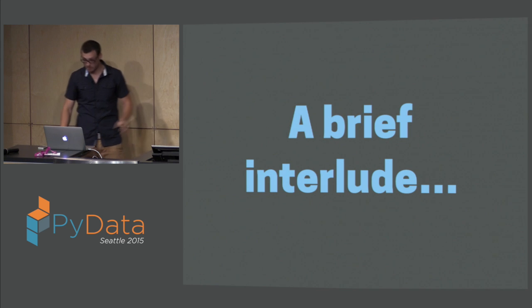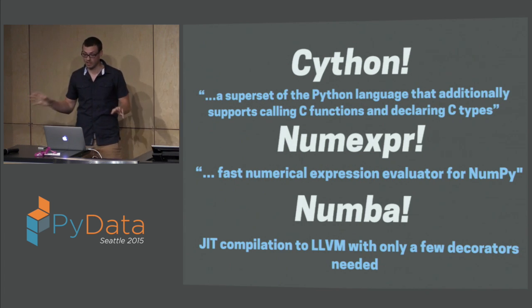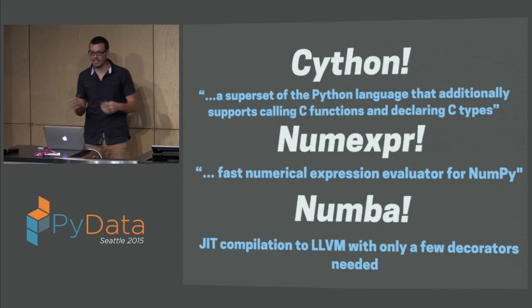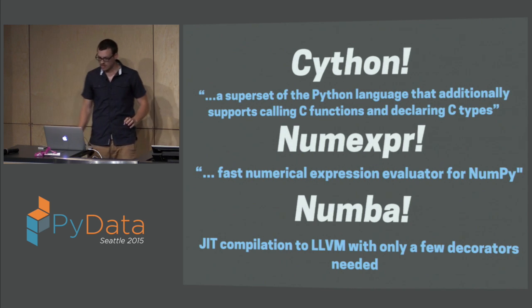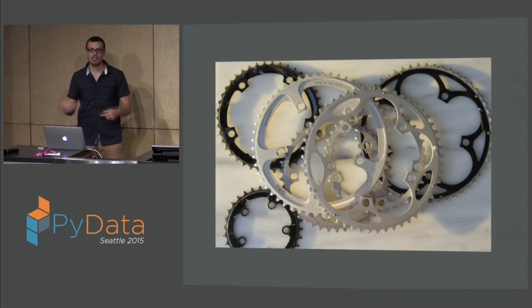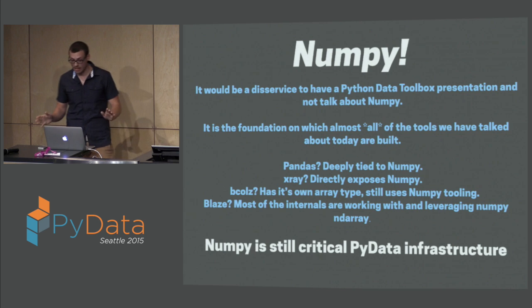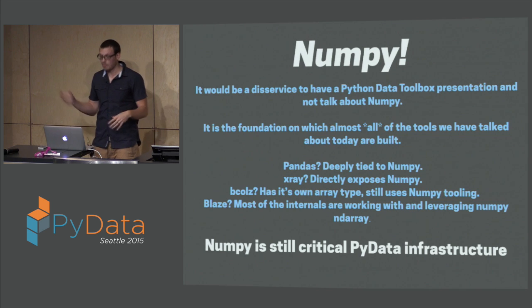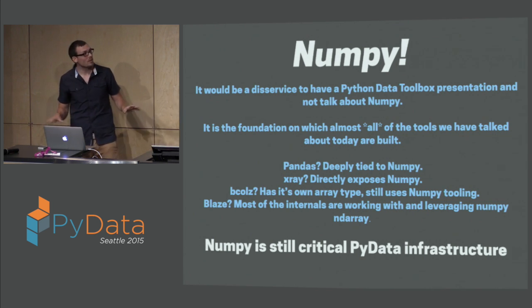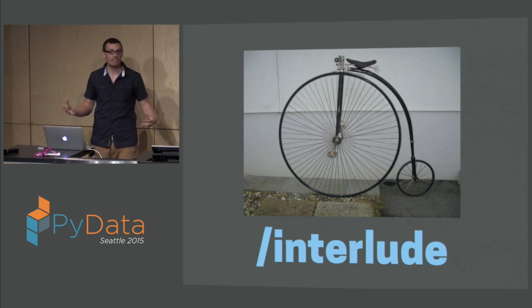Before we get into the rest of the libraries, a very brief interlude. Most of these libraries use things I can only briefly touch on — I like to think of these as accelerators. Cython is a superset of Python where you can call into C and make Python code very fast. NumExpr is a very fast expression evaluator for NumPy. Numba is JIT compilation to LLVM. All of those things are accelerating the code in a lot of the libraries we're going to talk about — they're essentially the gears to our bike. And I can't not talk about NumPy: it's sort of the foundation on which a lot of these things are built. Everything from here on out is either influenced by NumPy, directly using NumPy, or has NumPy helpers working within it. NumPy is still critical PyData infrastructure.